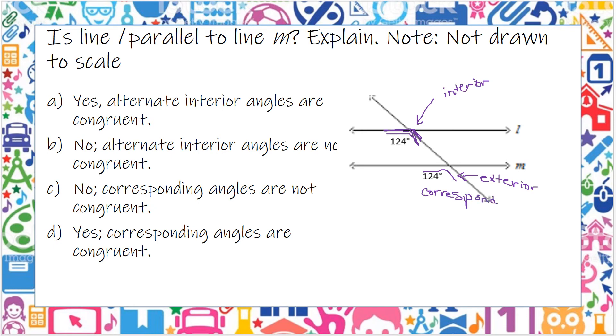Okay, so as long as these two numbers match, 124 and 124, as long as those are congruent, they're the exact same number, then yes, they are congruent.